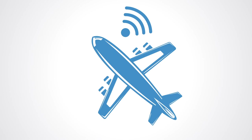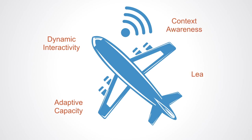The central characteristics of these smart systems are adaptive capacity, dynamic interactivity, a degree of context awareness and learning capacities.